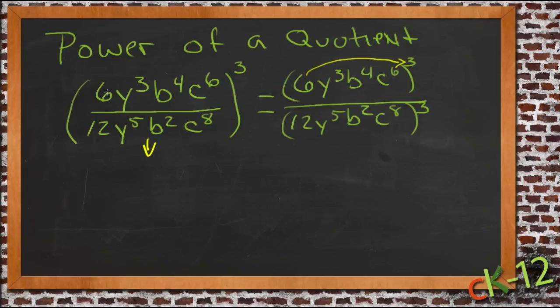We'll have 6 into 12. Well 6 into 12 cancels and it leaves a 2 on the bottom. So let's start rewriting our fraction here. We have 2 on the bottom and then we have y cubed or y times itself 3 times on top and 5 y's times themselves on the bottom. So if I cancel the 3 on top with the 3 on the bottom, that's going to leave 2. So we'll have y squared down on the bottom.